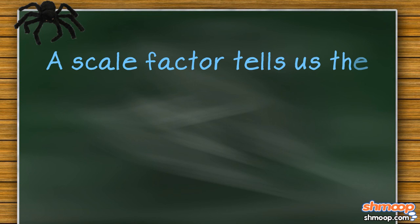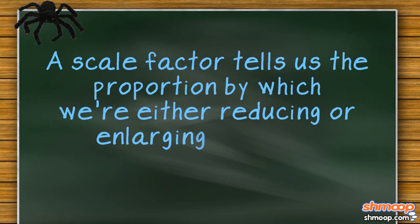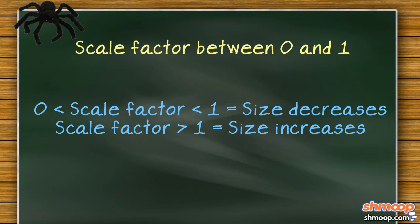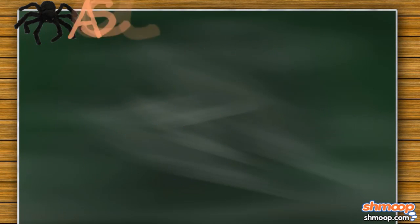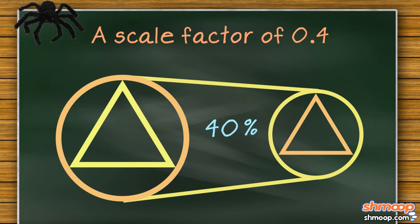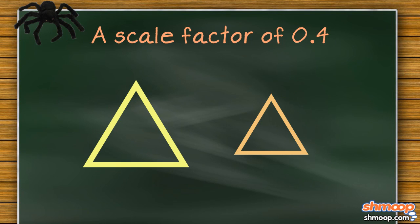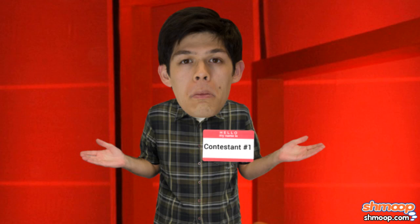As I'm sure you all well know, a Scale Factor tells us the proportion by which we're either reducing or enlarging a shape. With a Scale Factor between 0 and 1, as in this case, we'll be reducing the shape's size. A Scale Factor of .4 means the new shape will be 40% of the original size, meaning your scaled triangle should have had sides of 4, 8, and 14. Next time, don't be afraid to hit your buzzer thingy a little earlier.